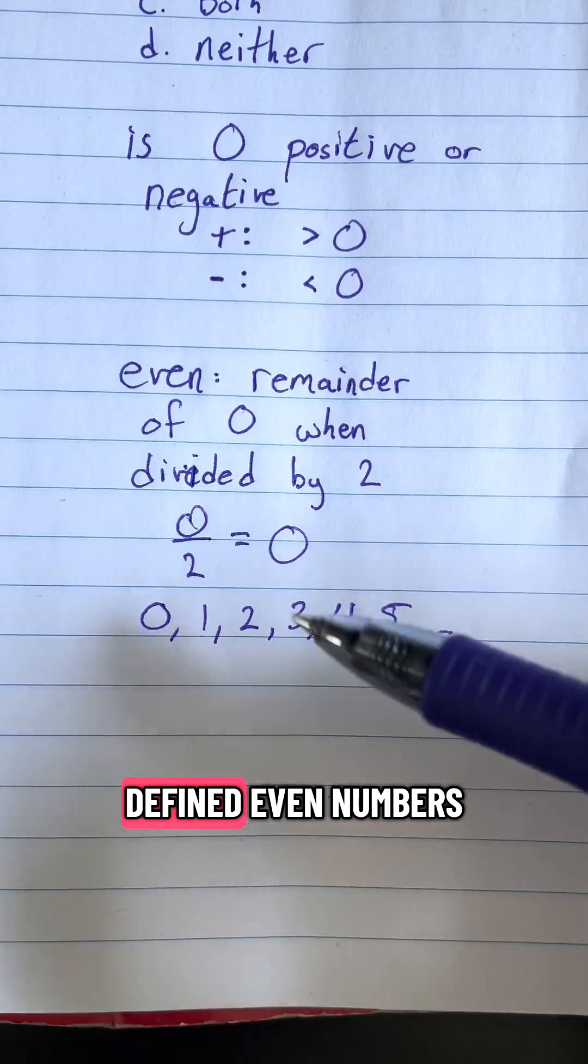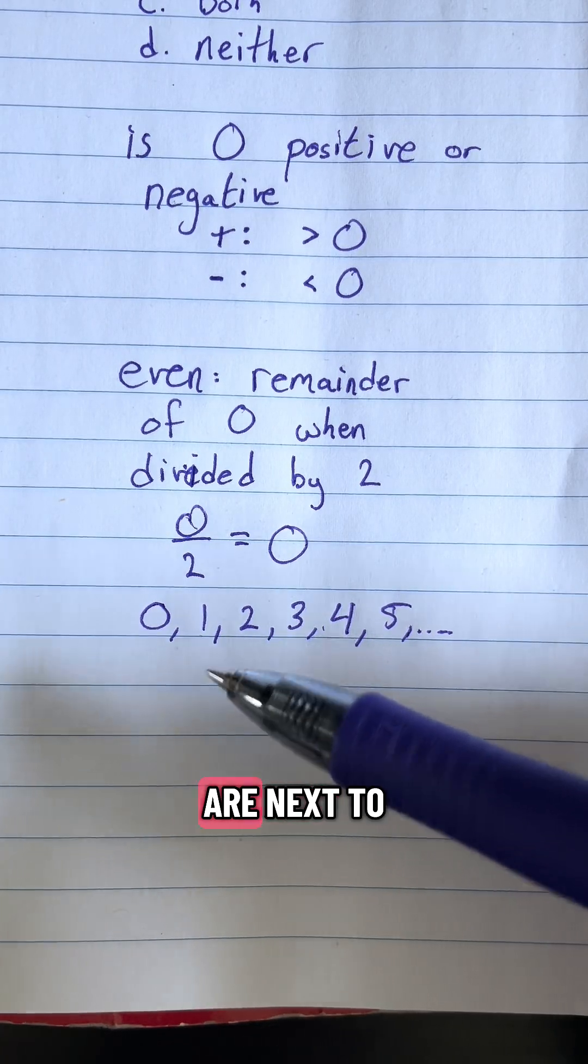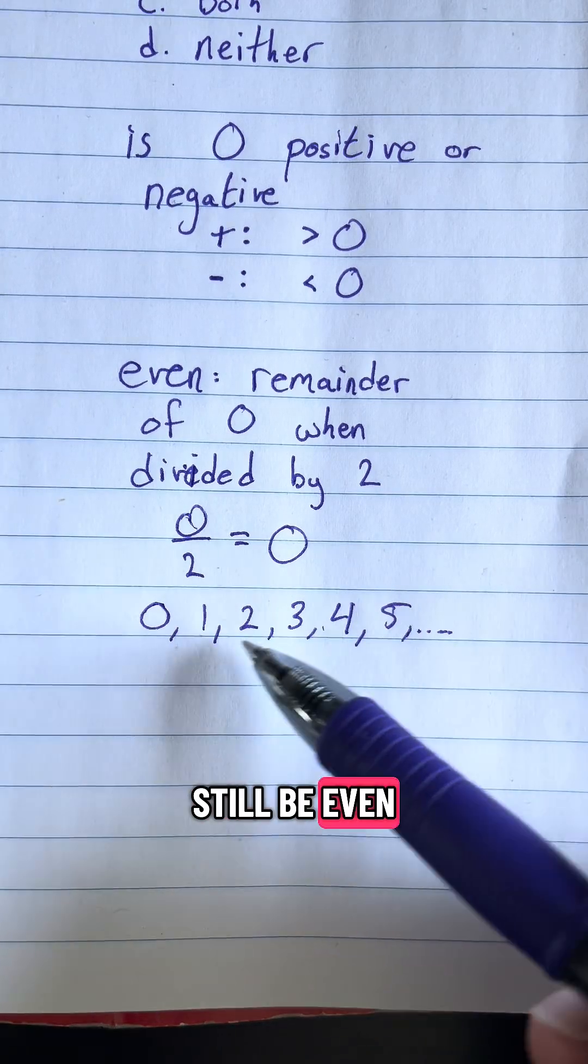Even if you were to define even numbers as numbers that are next to odd numbers, then zero would still be even.